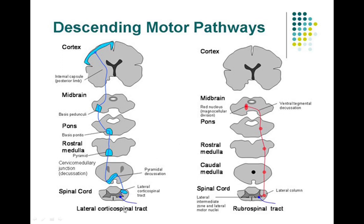As an example here, for the pyramidal tracts it is the lateral corticospinal tract, and for the extrapyramidal it is the rubrospinal tract, taking origin from the red nucleus. We will come back to extrapyramidal tracts in detail when we discuss them. Today, I am going to focus on the pyramidal tracts alone.